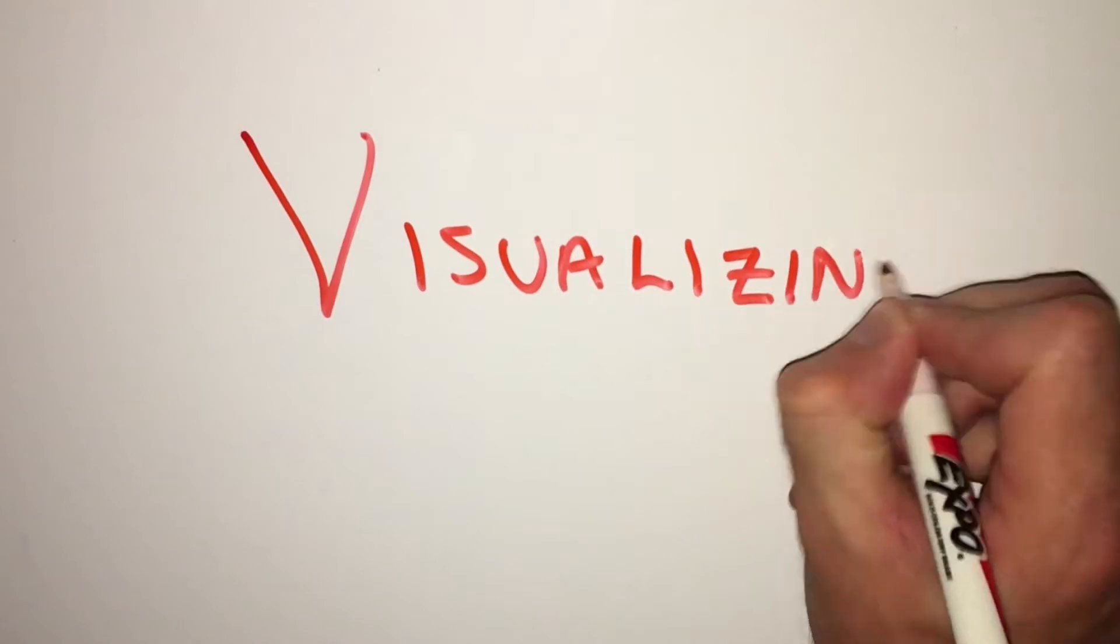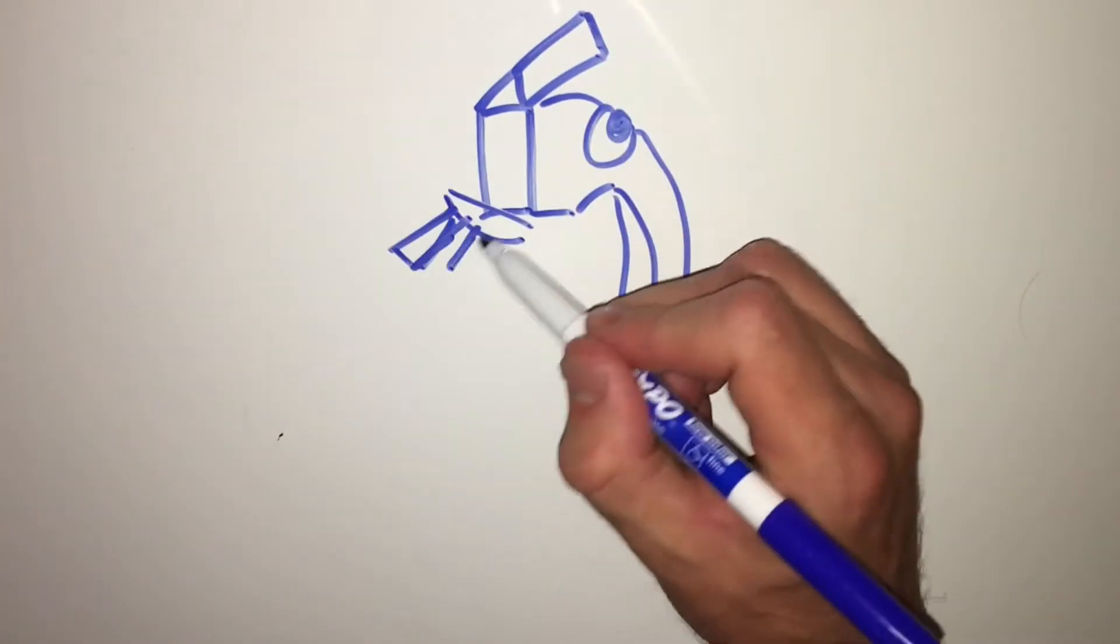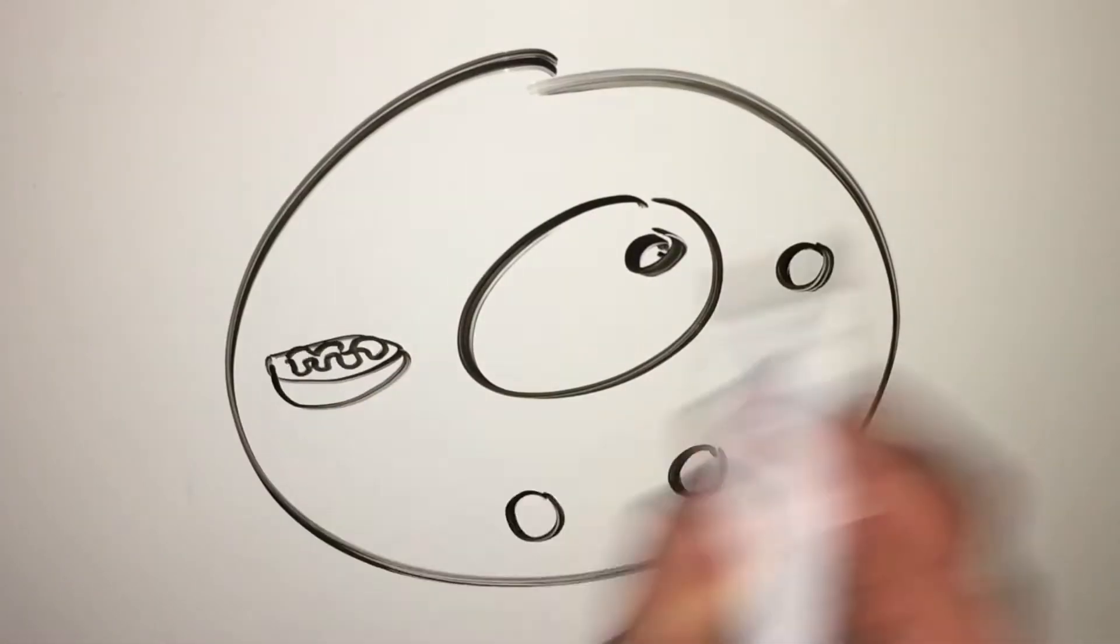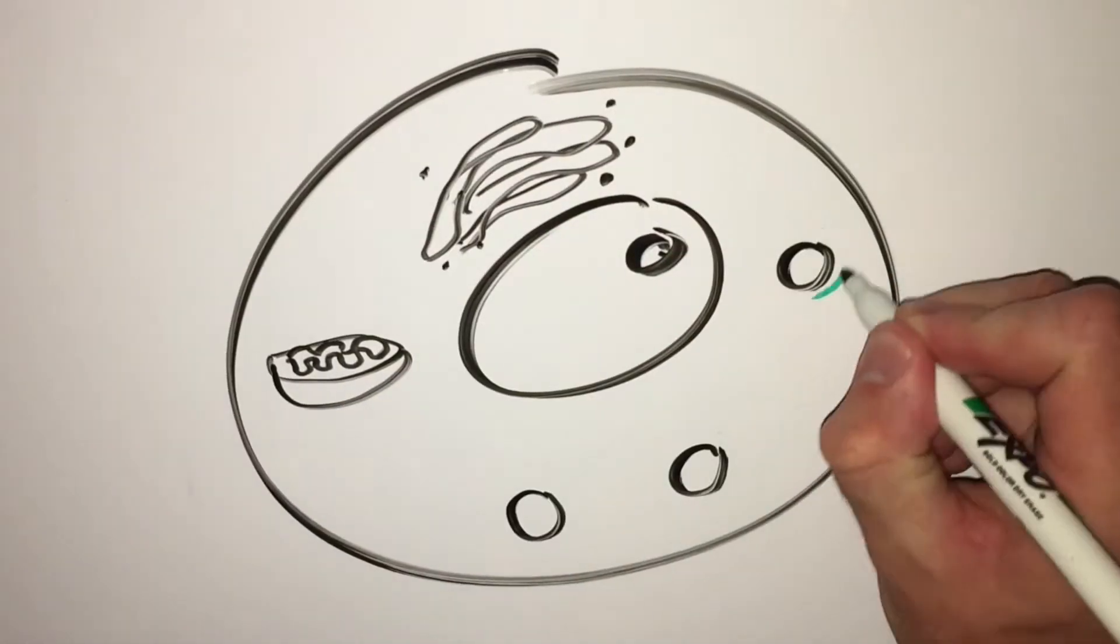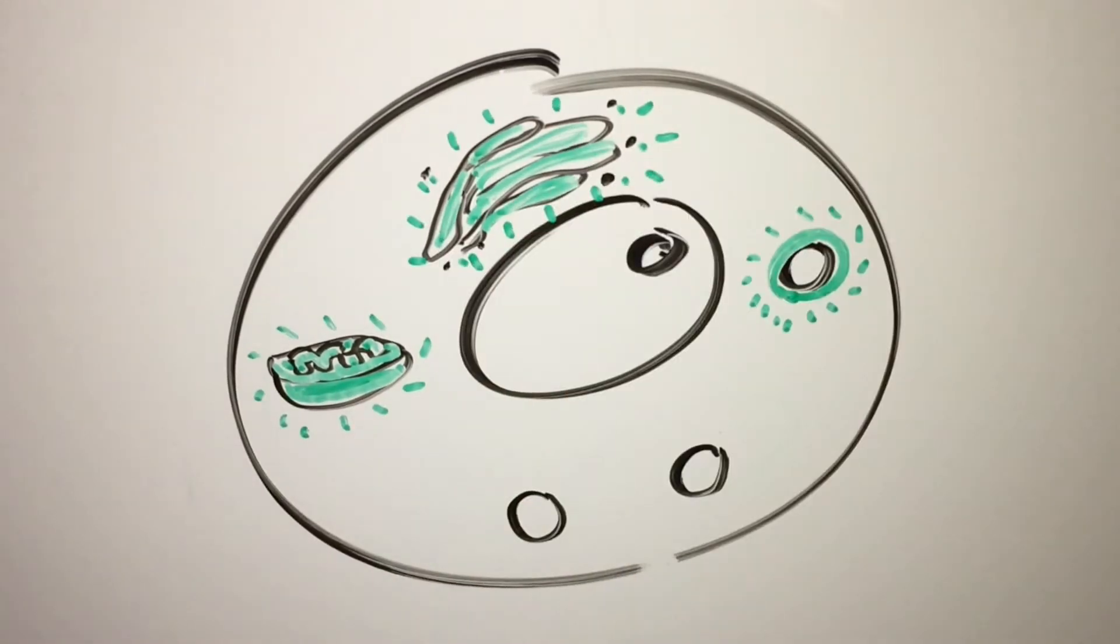When you think of visualizing the cell in classic biology terms, the first thing that comes to mind is a microscope. While a microscope is necessary to look inside the basic unit of life, many other steps and techniques must be first employed to give meaning to the images obtained from a microscope. We will next discuss two such techniques to make cellular components glow, so that they can be visualized with a fluorescent microscope.